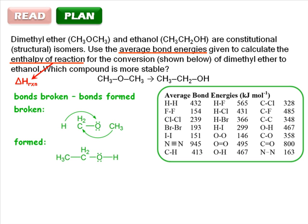The bonds formed are an oxygen-hydrogen bond and a carbon-carbon bond to give ethanol. So all we have to do is find those values on the table and use them to calculate the delta H of reaction. Let's solve the problem.